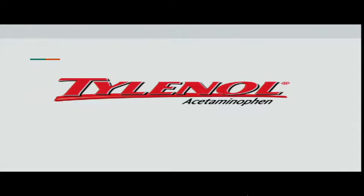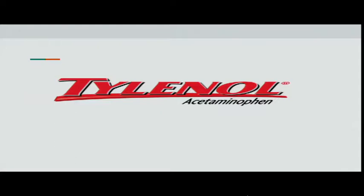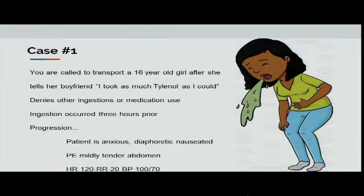Case number one: you're called to transport a 16-year-old girl after she tells her boyfriend she took as many Tylenol as she could. She denies other ingestions or medication use. Ingestion occurred three hours prior to the call. The patient is anxious, diaphoretic, nauseated, with a mildly tender abdomen. Vital signs: heart rate 120, respiratory rate 20, blood pressure 100 over 70. Do you transfer this patient?